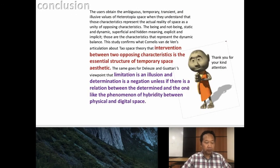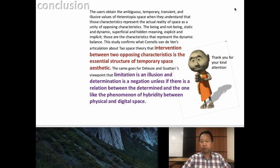In conclusion, the study confirms what Cornelis van de Ven's articulation about tau space theory — that the intervention between two opposing characteristics is the essential structure of temporary space aesthetics. The same goes for Deleuze and Guattari's viewpoint that limitation is an illusion and determination is negation, unless there is a relation between the determined and the undetermined, like the phenomenon of hybridity between physical and digital space. Thank you for your kind attention.